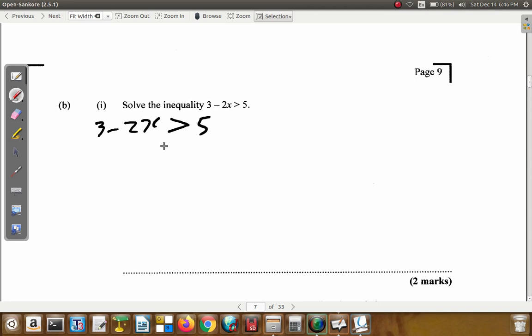3 minus 2x is greater than 5. Work it just like an equation. If you say 3 minus 2x is greater than 5, you want x alone. So, get rid of the 3 and get rid of the 2. When you get rid of the 3, you subtract 3 from both sides. So, what you have is 3 minus 2x is greater than 5. If I put in a minus 3 on the left, I must put in a minus 3 on the right as well. 3 minus 3 is 0, so I have negative 2x is greater than 5 minus 3 is 2.